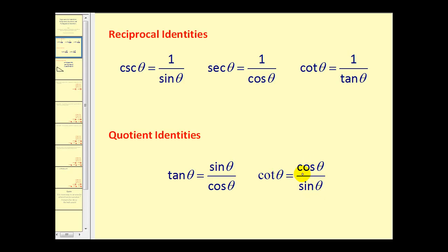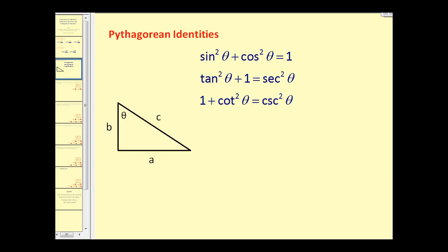We've already discussed these earlier this semester, so we're going to move along to the Pythagorean identities, but we will use these in some of the problems later. The three Pythagorean identities are: sine squared theta plus cosine squared theta is equal to one, tangent squared theta plus one is equal to secant squared theta, and one plus cotangent squared theta is equal to cosecant squared theta.